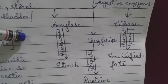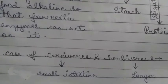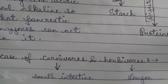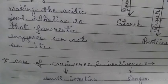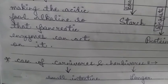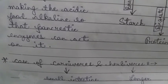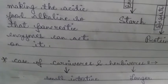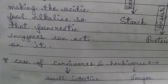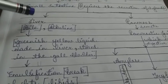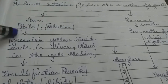Regarding carnivores and herbivores: herbivores are grass eaters and have a longer small intestine than carnivores. Carnivores eat meat, which is easier to digest. A common exam question is: why do herbivores need a longer small intestine to digest their food?